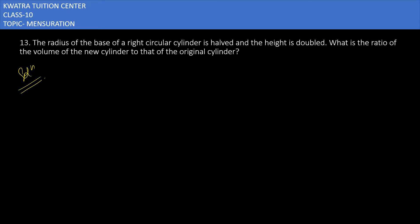In this question, the radius of the base of a right circular cylinder is halved, so r' = r/2. The height is doubled, so h' = 2h. What is the ratio of the volume of the new cylinder to that of the original cylinder?